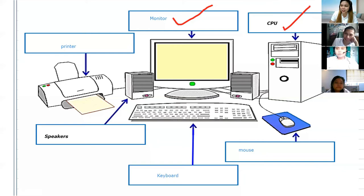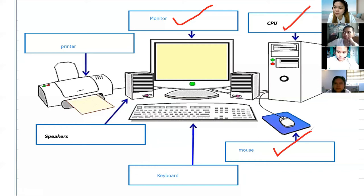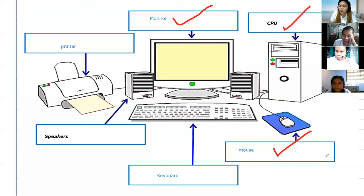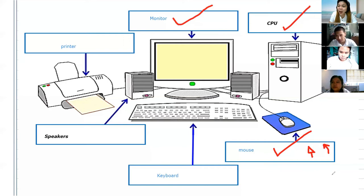How about this one, Aika? What do you think is the use of the mouse? We can open files and programs. So, what can we use — what's with the mouse that we can open programs? What do you call that one? It can move like this — we can see it on the screen. Pointer. Pointer, okay, very good, Aika.